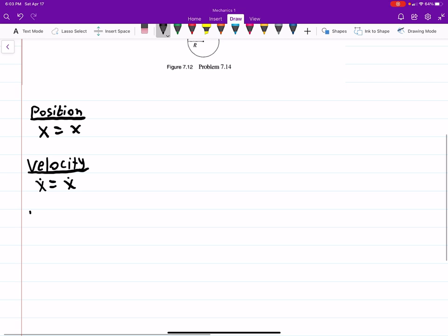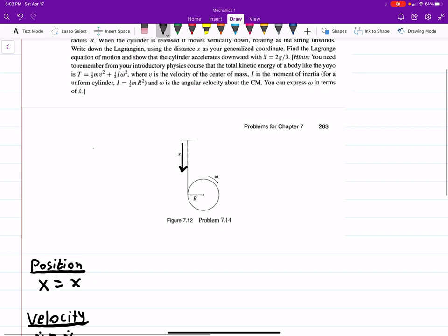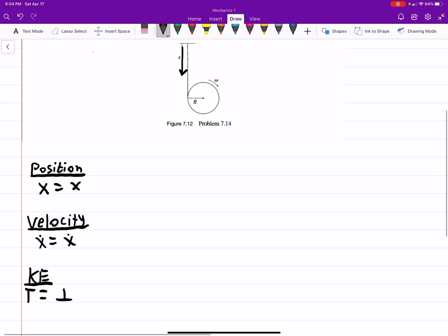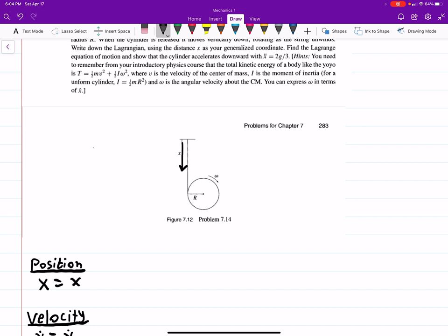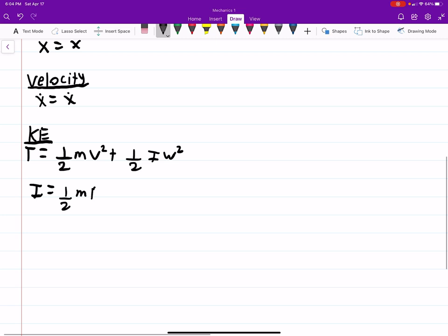Once we have velocity, we can find the kinetic energy pretty easily. Now it mentions that we need to remember from elementary physics that our kinetic energy T for a rotating body is one-half mv squared plus one-half I omega squared. They give us the geometry, and they tell us the moment of inertia is one-half mr squared. The other thing that's important to remember is x dot is equal to r omega. So omega is equal to x dot over r, squared.